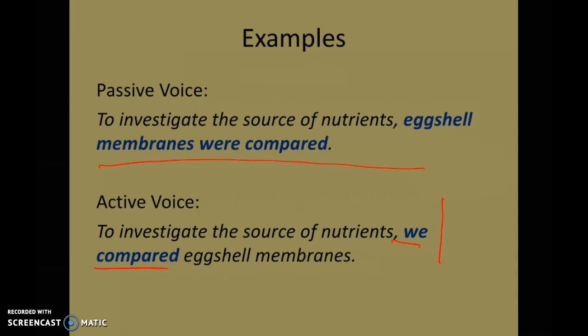This clearly writes the researchers in as the agent of the action. Of course, you want to avoid having each sentence in your method section saying 'we did this, and then we did this' — it can get monotonous. So it's about variance and balance. Knowing when to change passive to active to keep your reader more engaged is a really useful tool and one of the principles I really wanted to emphasize in this course.